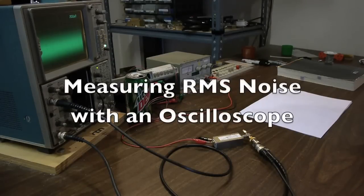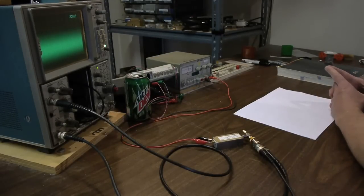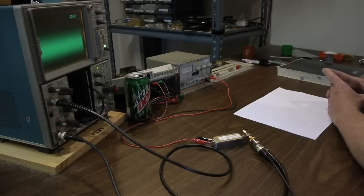We have a demonstration here of a very clever technique using a Tektronix 7603 analog oscilloscope to measure the RMS value of a noise wave.